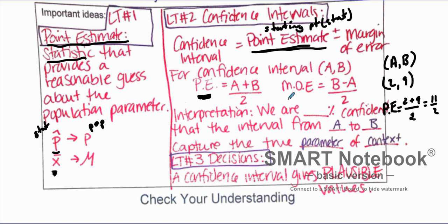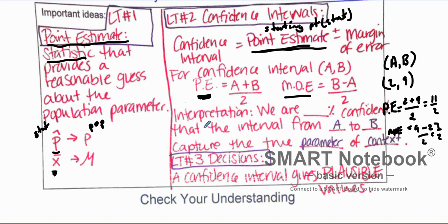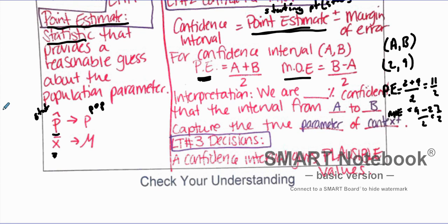The margin of error is what we add and subtract from the point estimate to get from A to B. You calculate it as (B minus A) divided by 2. So 9 minus 2 is 7, divided by 2 equals 3.5. We're adding and subtracting 3.5 from 5.5 to get our interval of 2 to 9.